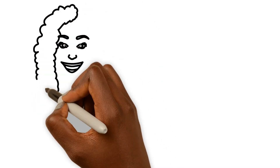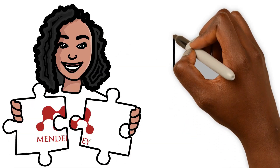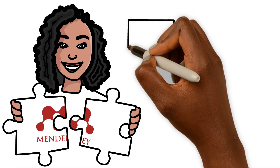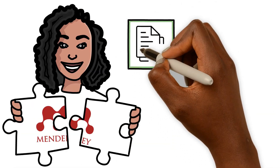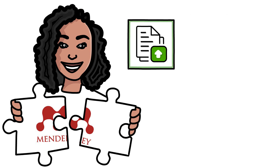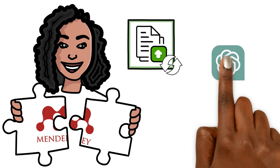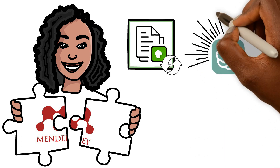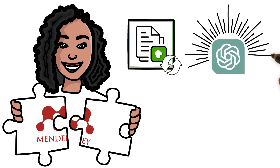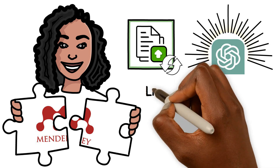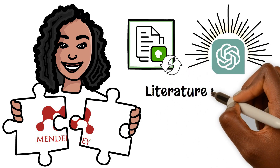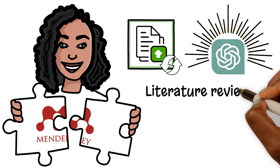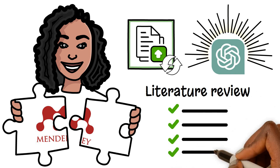Now it's time to organise your references using a reference manager like Mendeley. Upload the papers you've used and revise the draft to include the full references. With the solid thematic structure provided by GPT-4, you can now refine and expand the draft as needed to ensure that your literature review is comprehensive and accurately represents the key findings from the selected articles.